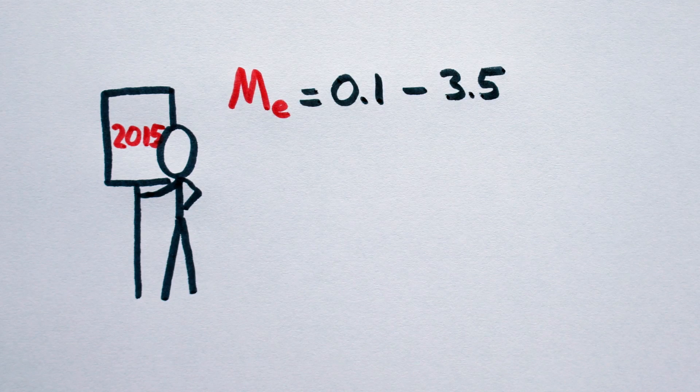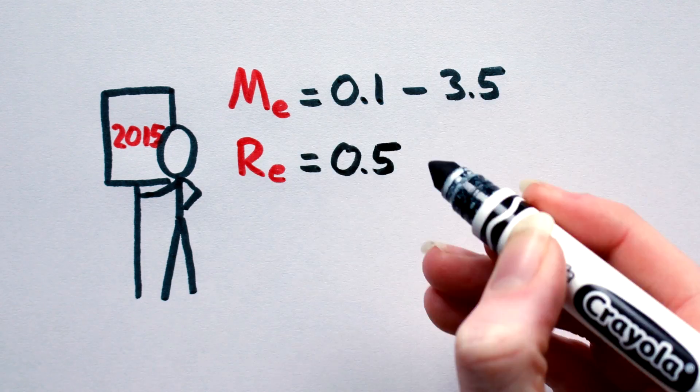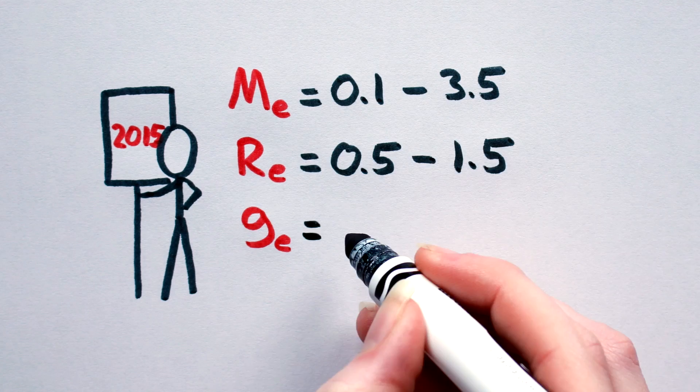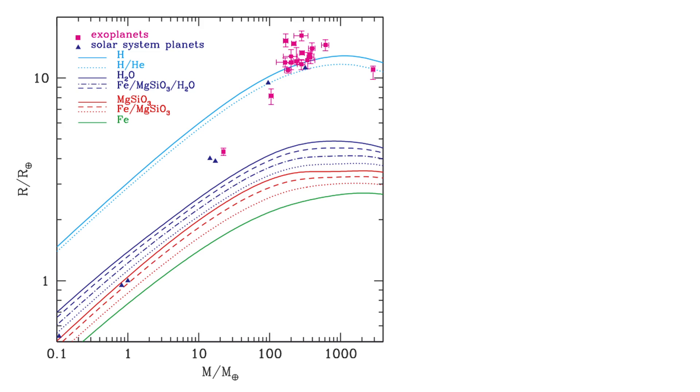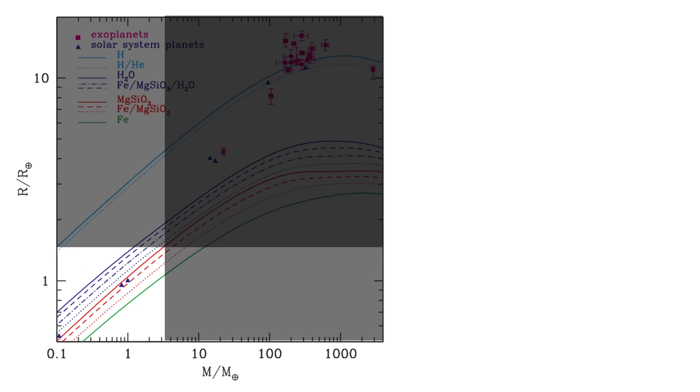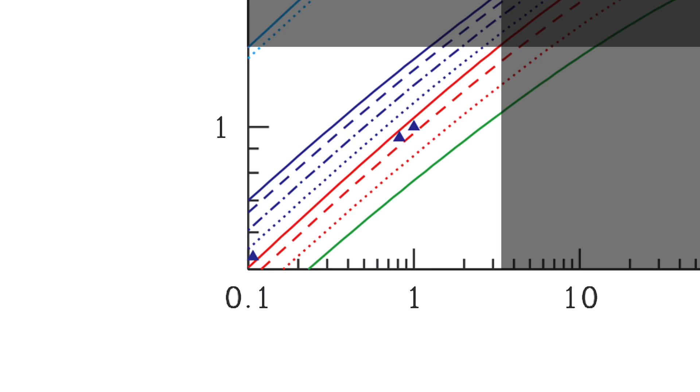but in light of our current scientific understanding they are a bit conservative. Current research gives us something more like 0.1 to 3.5 Earth masses, 0.5 to 1.5 Earth radii, and a gravity range of about 0.4 to 1.6. So on our graph here, we can discard everything above 3.5 Earth masses and 1.5 Earth radii, leaving us with this window of creative opportunity.